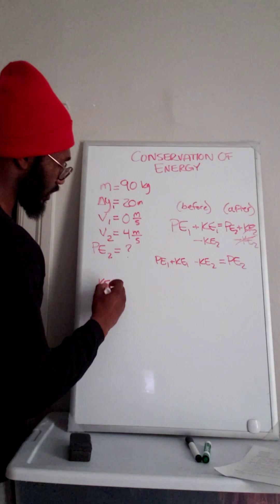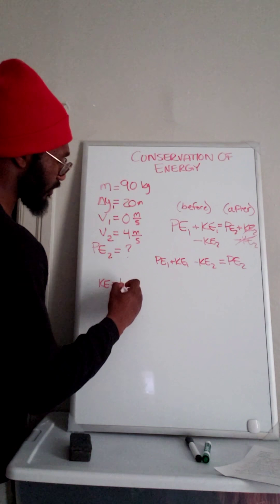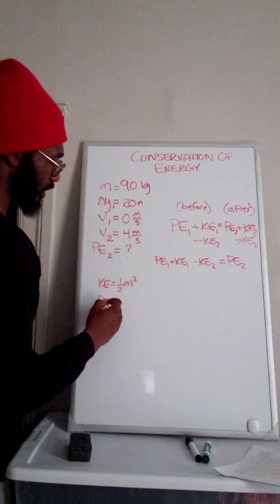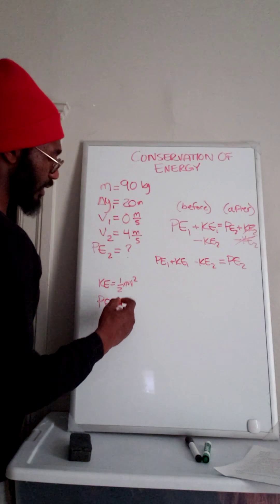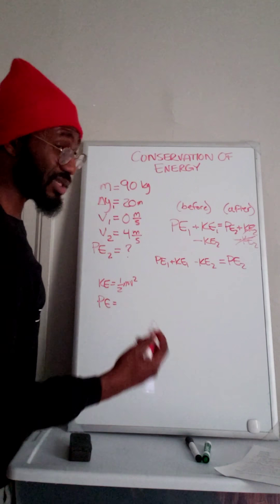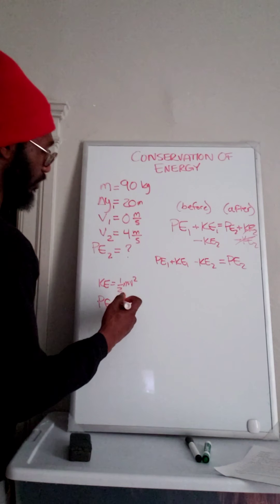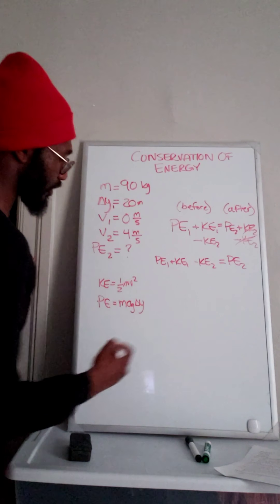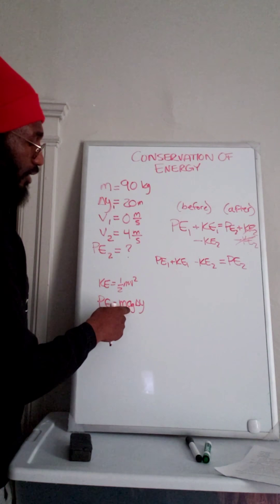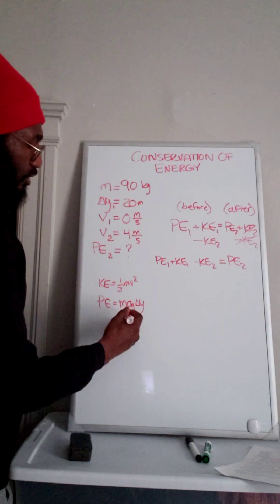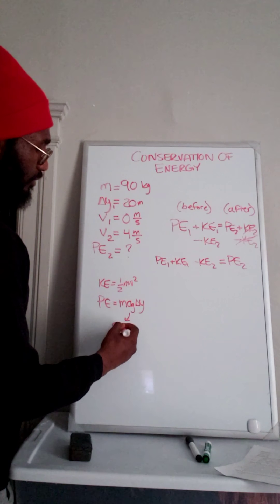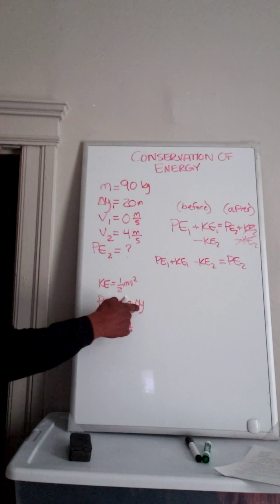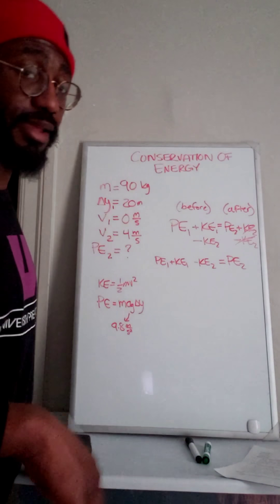The equation for kinetic energy is one-half mv squared. The equation for potential energy that we've been using is mgh, but the one we've been using is mag delta y. Mass times the acceleration due to gravity, which is always that 9.8 meters per second squared, times delta y, which is the height above the ground.